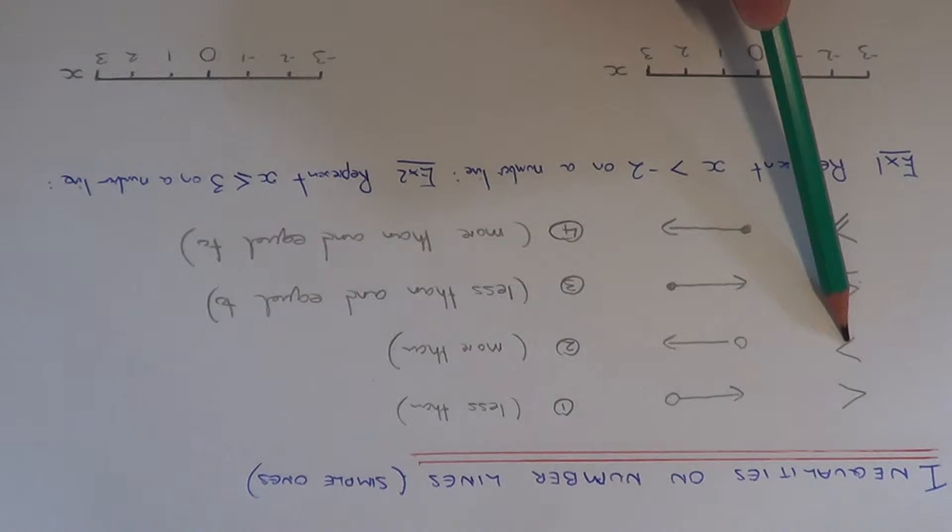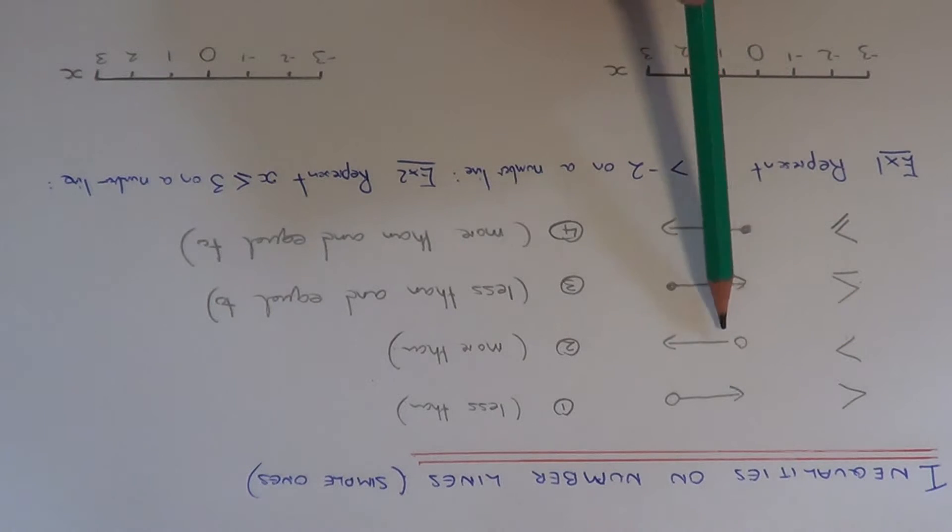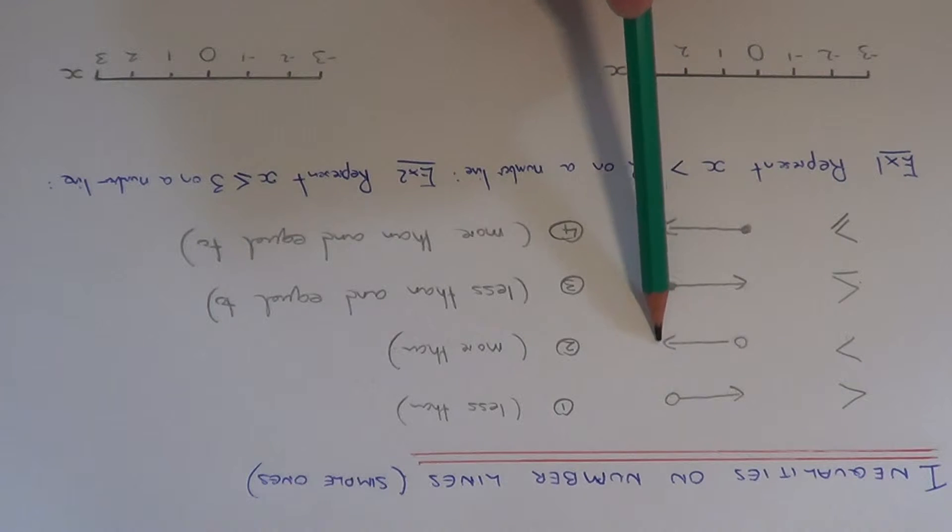The second inequality sign is more than. For more than, again you do a circle not coloured in and an arrow pointing to the right.